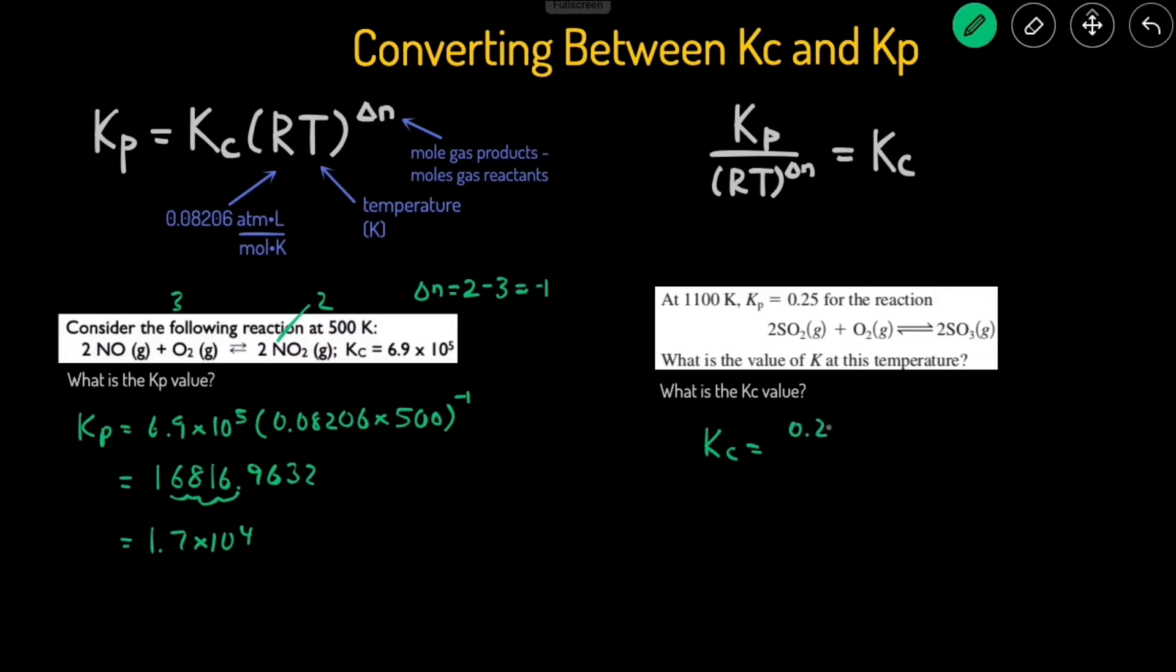So we're going to use the equation Kc equals Kp, which is 0.25 divided by R, 0.08206, multiplied by the temperature in degrees Kelvin, which already is 1,100 raised to the power of delta N.